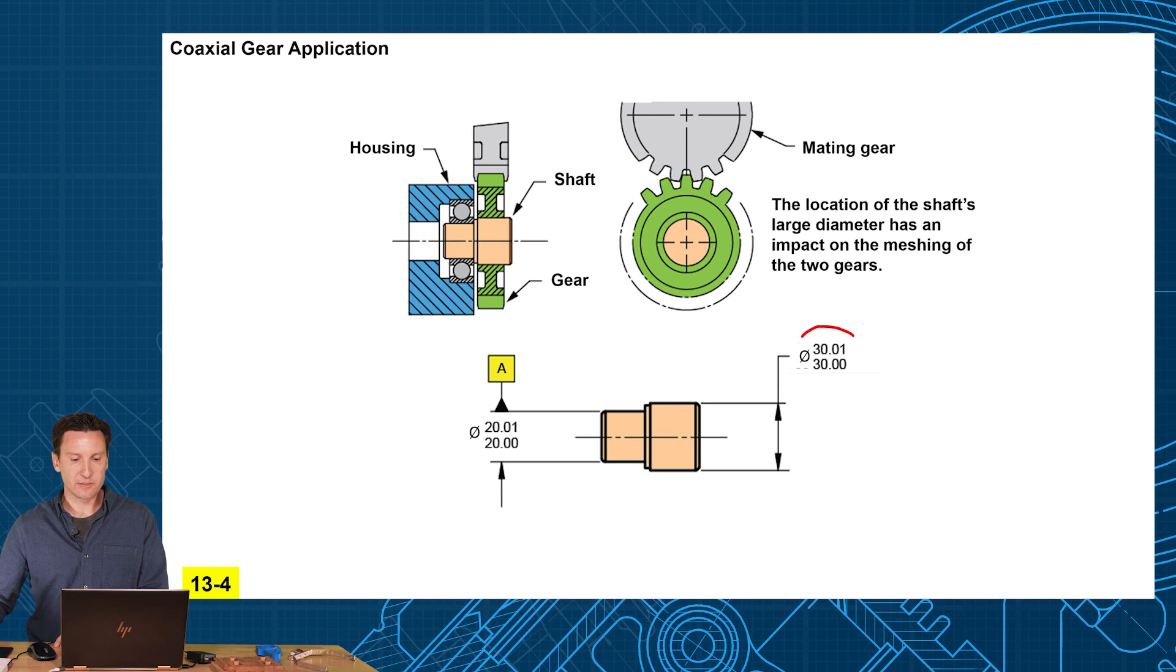Now I did put a tight size tolerance on here. This is millimeters. So that's going to be 10 microns. That's about four ten-thousandths of an inch if you're an inch person there. So really tight size there. And that's because you need that fit for the press fit onto the main gear.